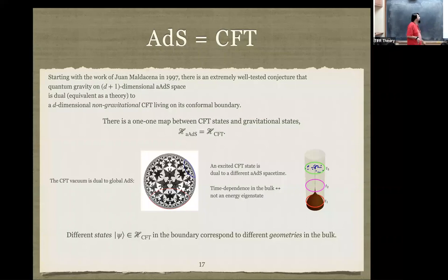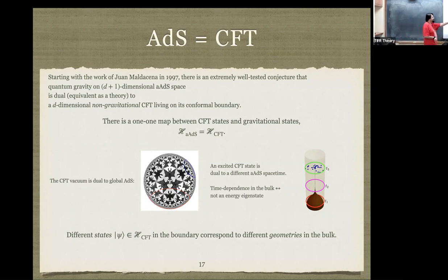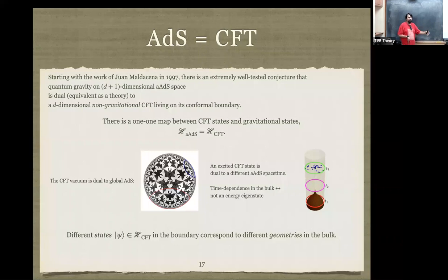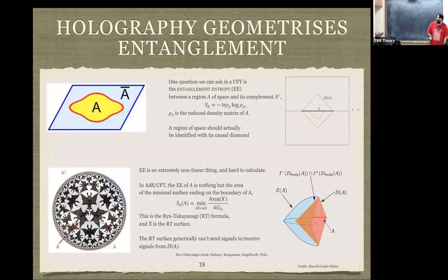The map between states looks like: the CFT vacuum is dual to global ADS space. An excited state looks like some different asymptotically ADS space-time. Different CFT states in general correspond to different geometries in the bulk. This is one really cool thing about ADS-CFT: it geometrizes Hilbert space. In fact it geometrizes something much more interesting — the entanglement structure.